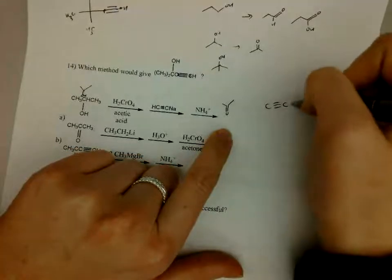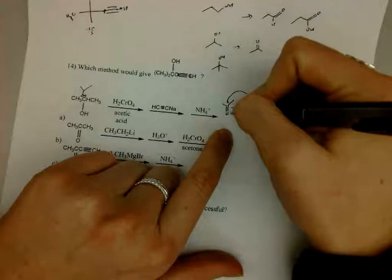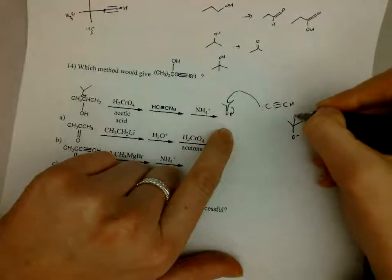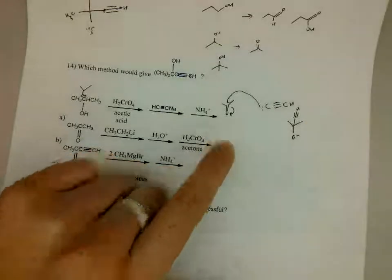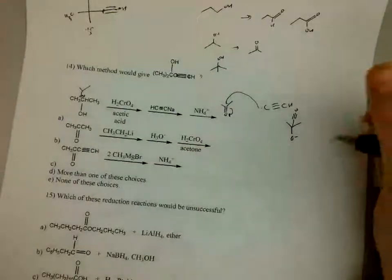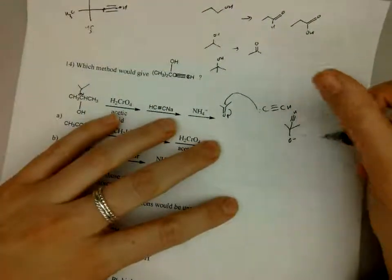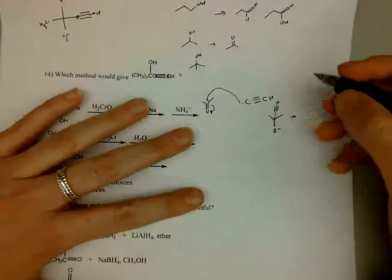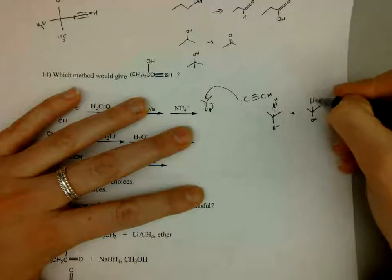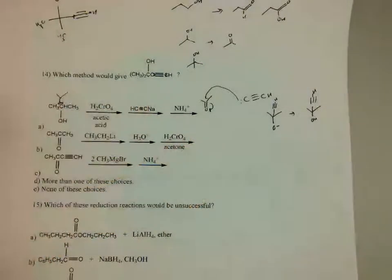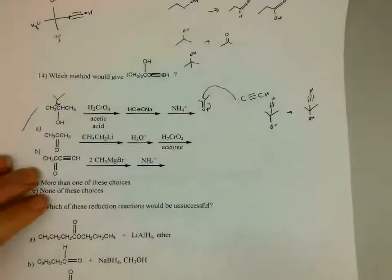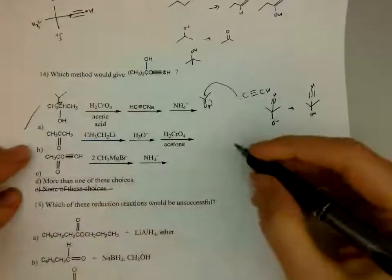So secondary will go to a ketone. And then we have this as our nucleophile, so it will attack and kick up. This is looking promising, actually. O minus, and then the carbon-carbon triple bond right there where it added. There's not a good leaving group, so we would finish off with adding acid. So this actually could be one of our answers. None of these choices we can go ahead and get rid of.